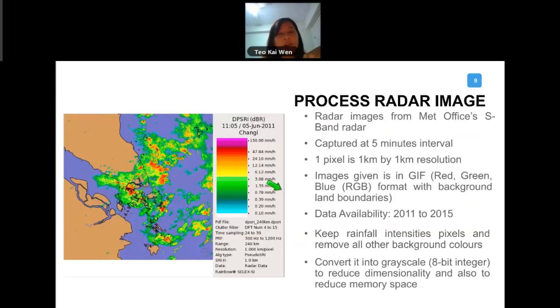What is interesting is we need to process radar images. This is not very common in hydrology and hydraulics. Radar images we got from our met office, this S-band weather radar. It is captured at every five minutes, so you can imagine it's a very big file that we are handling. The radar images are of one pixel - one pixel of it is one kilometer by one kilometer in resolution. The radar images are in RGB format. The availability of the data is from 2011 to 2015, very big files that we have.